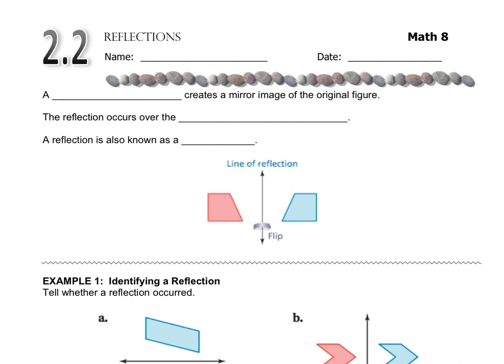The next transformation we're going to look at is a reflection, and a reflection creates a mirror image. Typically when you think of a reflection, you're thinking of a mirror looking back at you. A reflection occurs over something called the line of symmetry or line of reflection, which you probably talked about back in either 5th or 6th grade. A reflection is also known as a flip.